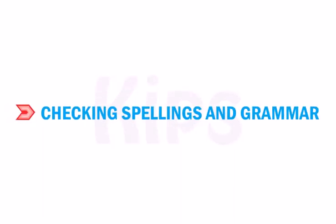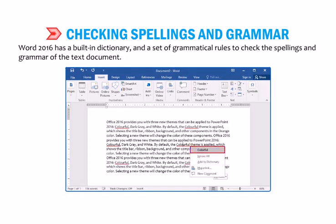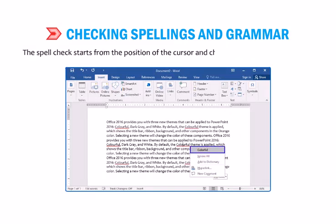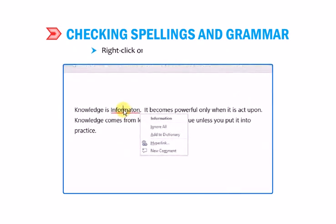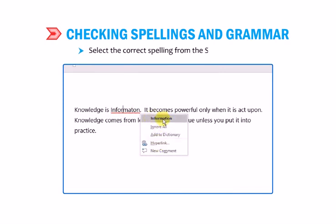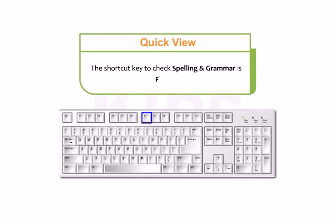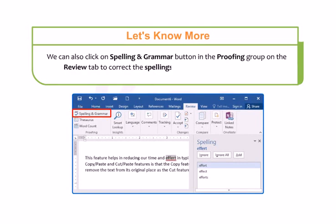Let us find out how to check spelling and grammar. Word 2016 has a built-in dictionary and grammatical rules to check the spelling and grammar of the text. Incorrectly spelled words are displayed with a single red wavy line. Grammatical errors are indicated with a green wavy line. The spell check starts from the cursor position and checks the complete document. Right-click on the word with a red wavy line — a shortcut menu opens with suggestions. Select the correct spelling and Word automatically replaces it. The shortcut key is F7. You can also click on Spelling and Grammar in the Proofing group on the Review tab.